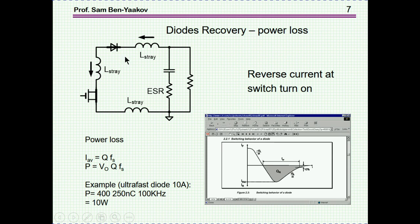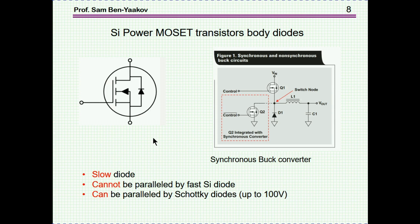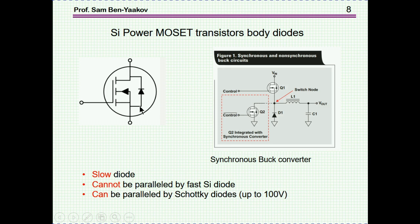Another point to make is that a power MOSFET transistor does have a body diode. It's built in — not something connected to it, just part of the construction. Unfortunately, this diode is a slow diode, meaning it has a long reverse recovery time. So there will be a lot of reverse current, the peak reverse current will be high, and the amount of charge will be large, which may cause some problems in various situations.